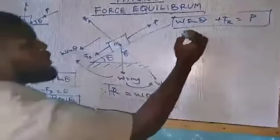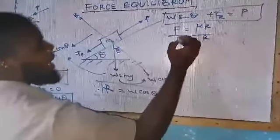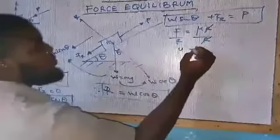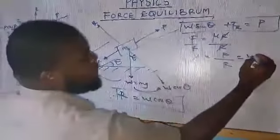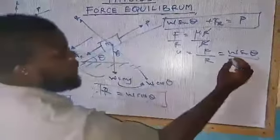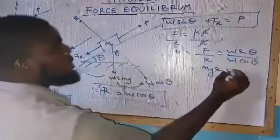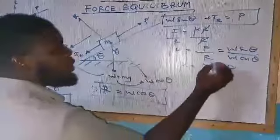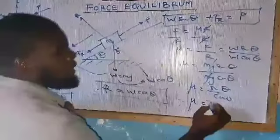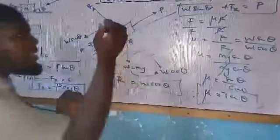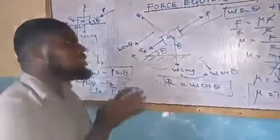Resolving along the plane: W sin θ plus FR equals P, since they act in opposite directions. Since FR equals μR, and dividing both sides, μ equals force over R — the force parallel to the plane is W sin θ and R equals W cos θ. Therefore μ equals Mg sin θ over Mg cos θ, which simplifies to sine θ over cos θ. Therefore, μ equals tan θ.